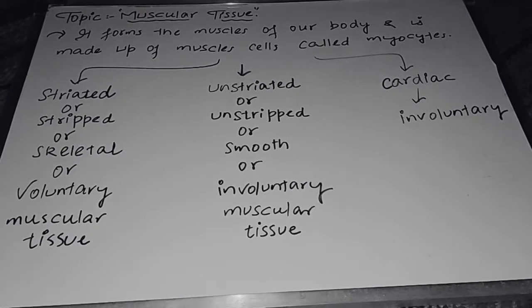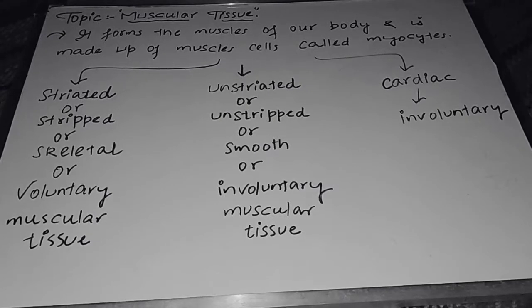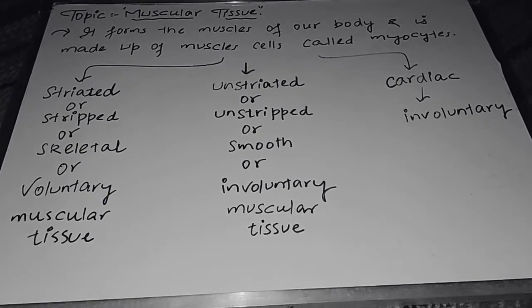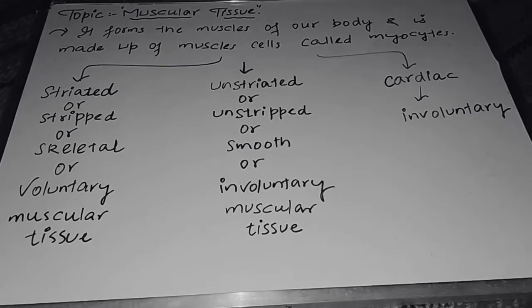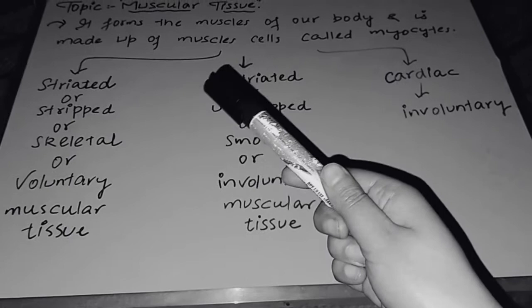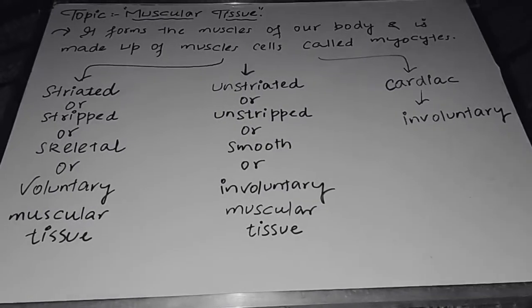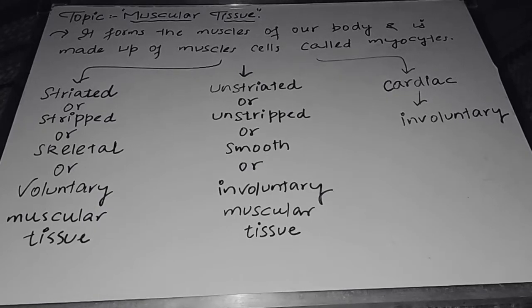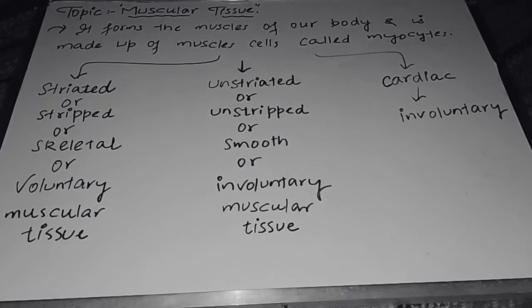So it forms the muscles of our body and is made up of muscle cells called myocytes. So the cells are called myocytes. As you know, every tissue is made up of cells because a tissue is the aggregation of cells.